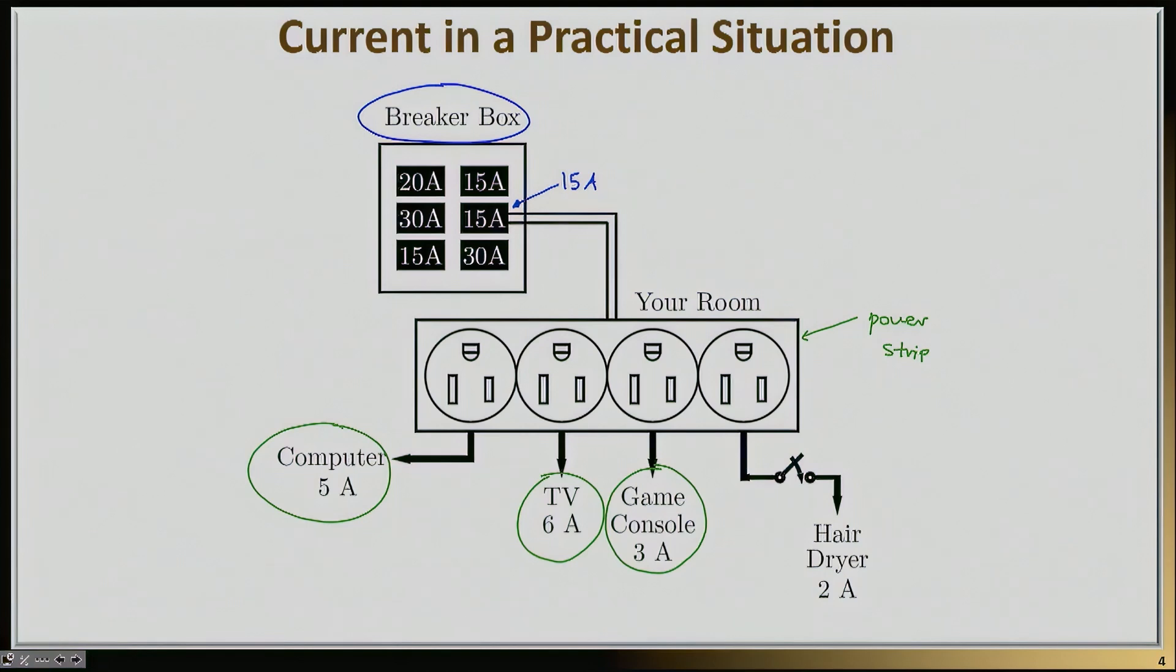If you do a quick calculation here, 5 amps plus 6 amps plus 3 amps will give you 14 amps of current flow. This is barely below the 15 amp limit, and therefore all three of these devices can work together. But if you try to connect one more device, let's say a hair dryer that would require another 2 amps of current, then this will immediately trip the circuit breaker, because now you have exceeded the maximum and reached 16 amps. Here I have also made the assumption that all of these currents are adding up together, and as we're going to learn later on, this is a fundamental law called Kirchhoff's Current Law.